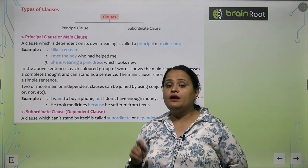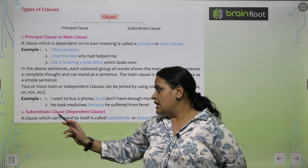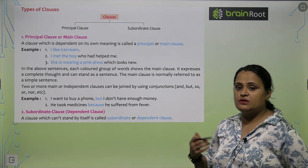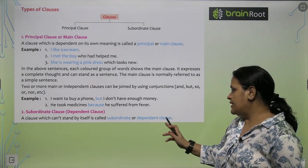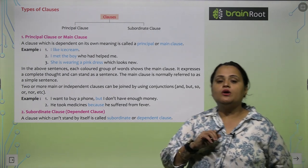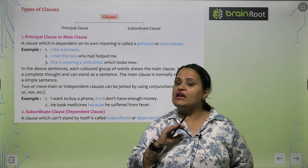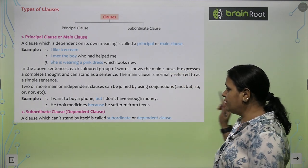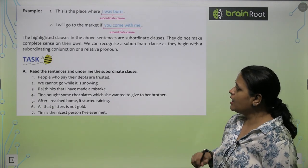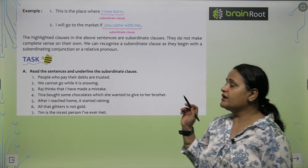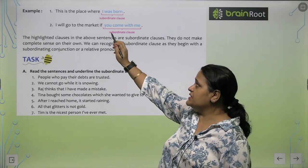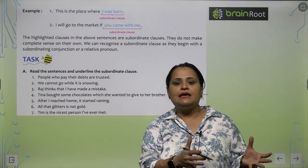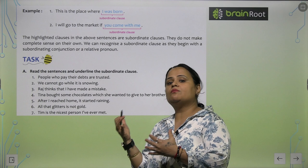Subordinated clause are called dependent clause. A clause which cannot stand by itself is called subordinated or dependent clause. Joh khud se apne meaning ko clear nahi karta that is called dependent clause. Now, example. This is the place where I was born. So, this is the place where I was born.